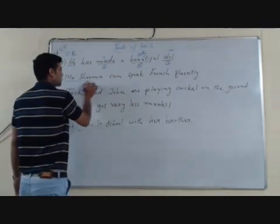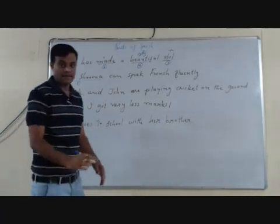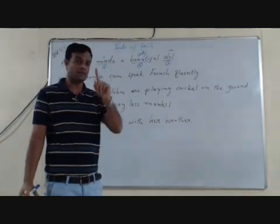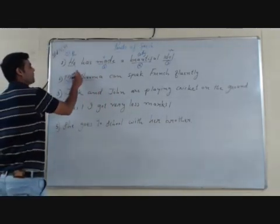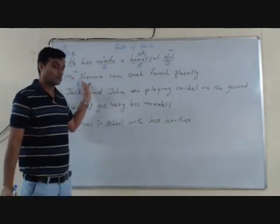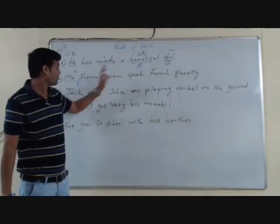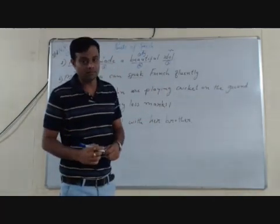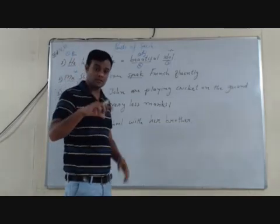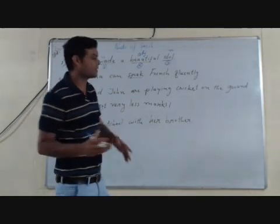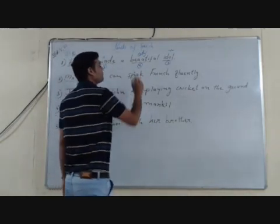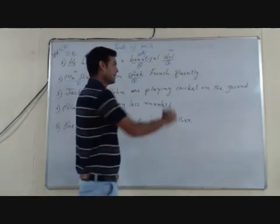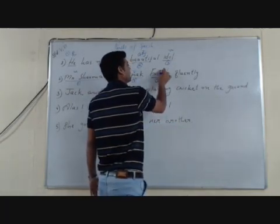The very first word, 'Mr. Sarma', is a name of a person. A name of a person, place, or thing is called a noun. So 'Mr. Sarma' is a noun as a part of speech. Next, 'speak' — this word shows action, the action of speaking. A word which expresses action is called a verb. So 'speak' is a verb. Then 'French' — it is a name of a language, so it is a noun.